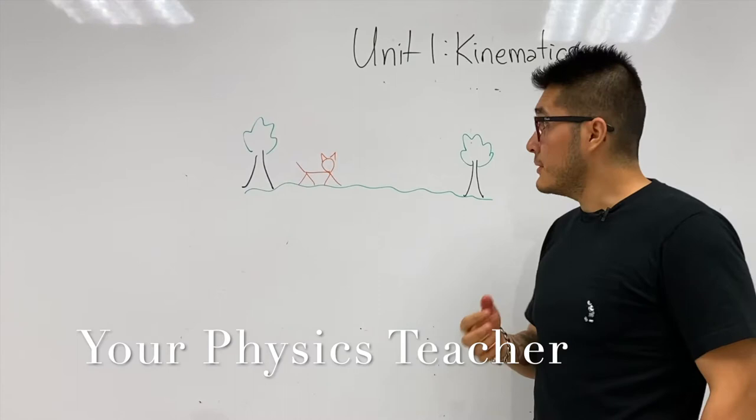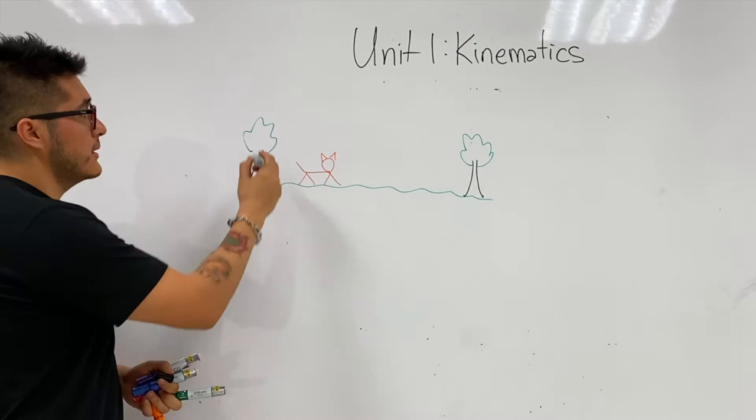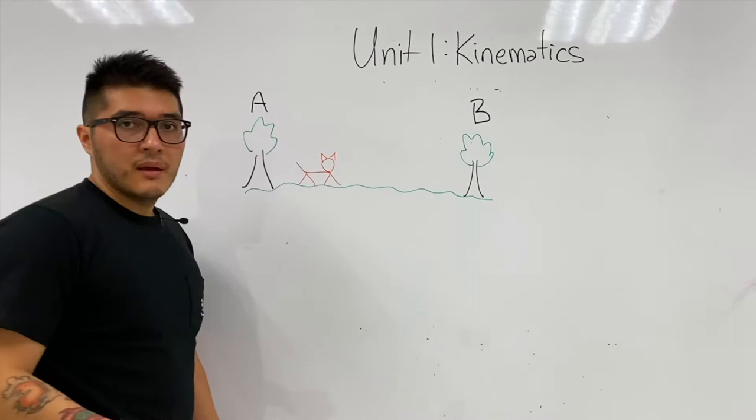Alright, so here we have a cheetah. But now we have two objects that are not changing position - we have two trees. Let's call this one tree A and this will be tree B.